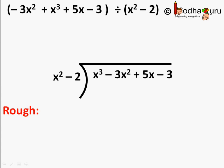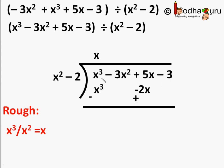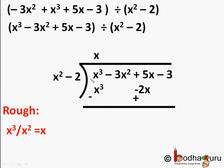Now let us start the long division process. To get the first term of the quotient, divide the highest degree term of the dividend by the highest degree term of the divisor. So we do x cubed divided by x squared, and we get x. We write x as the quotient above the line. Now we multiply x squared minus 2 by the quotient x, getting x cubed minus 2x. We write it below the dividend, matching its degree to each term — x cubed below x cubed, and minus 2x below 5x.